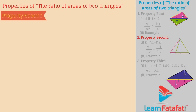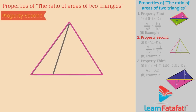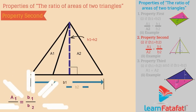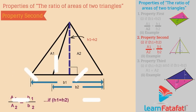Second, the ratio of areas of two triangles having common or equal height is equal to the ratio of bases of the two triangles. That is, A1 divided by A2 is equal to B1 divided by B2, if H1 is equal to H2.